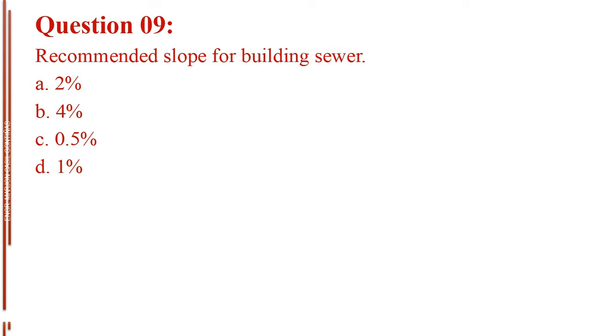Question number 9. Recommended slope for building sewer. Letter A, 2%. Letter B, 4%. Letter C, 0.5%. Letter D, 1%.